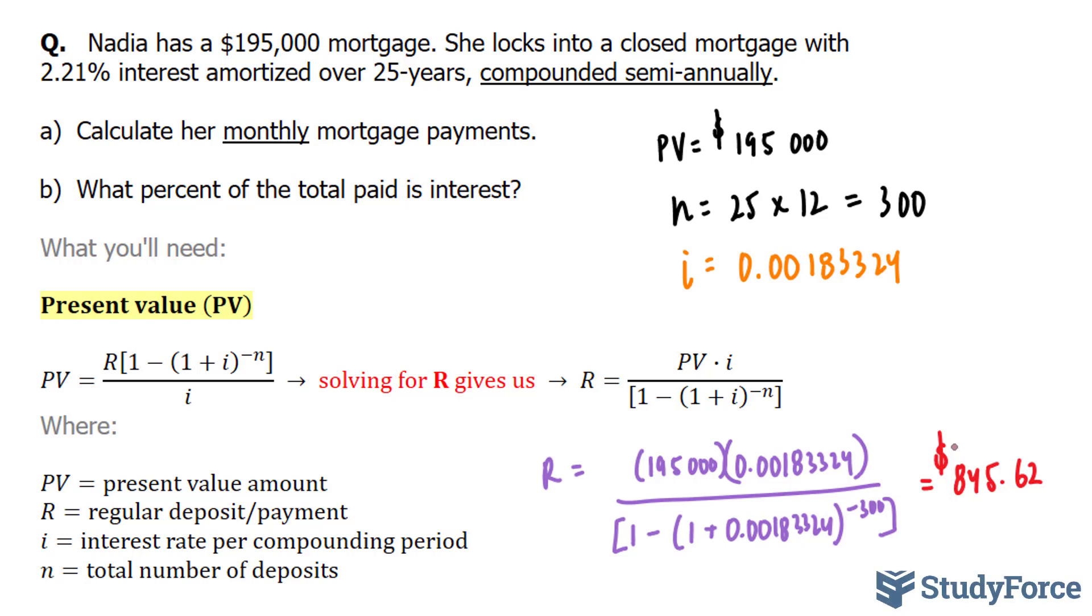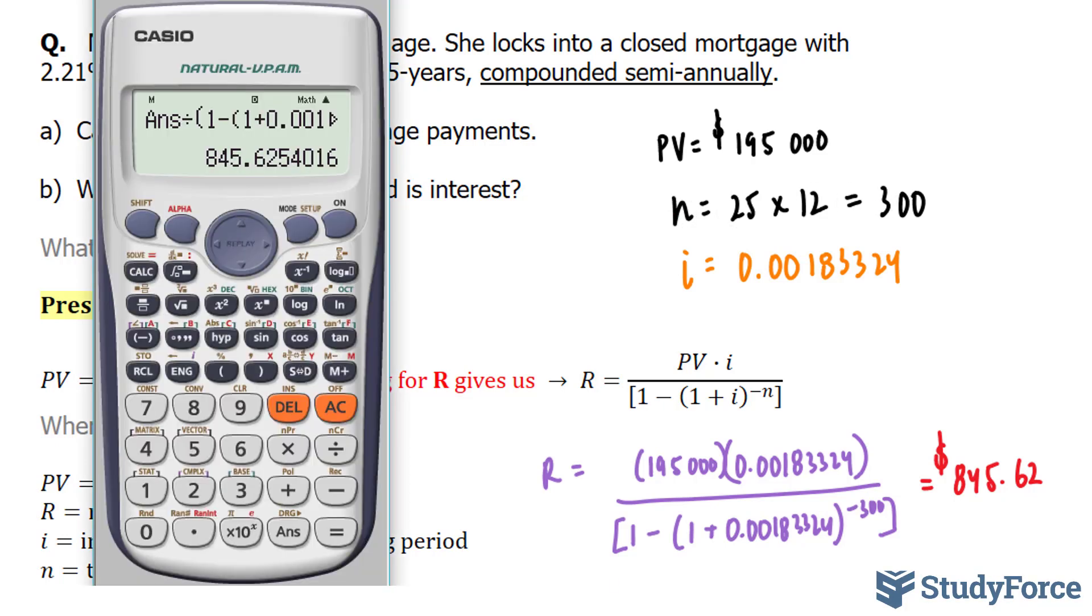Question B asks, what percent of the total is interest? Well, to find out, we're going to multiply this number by the number of payments, and we found out that it was 300. So let's multiply this by 300, and we end up with 253,687.